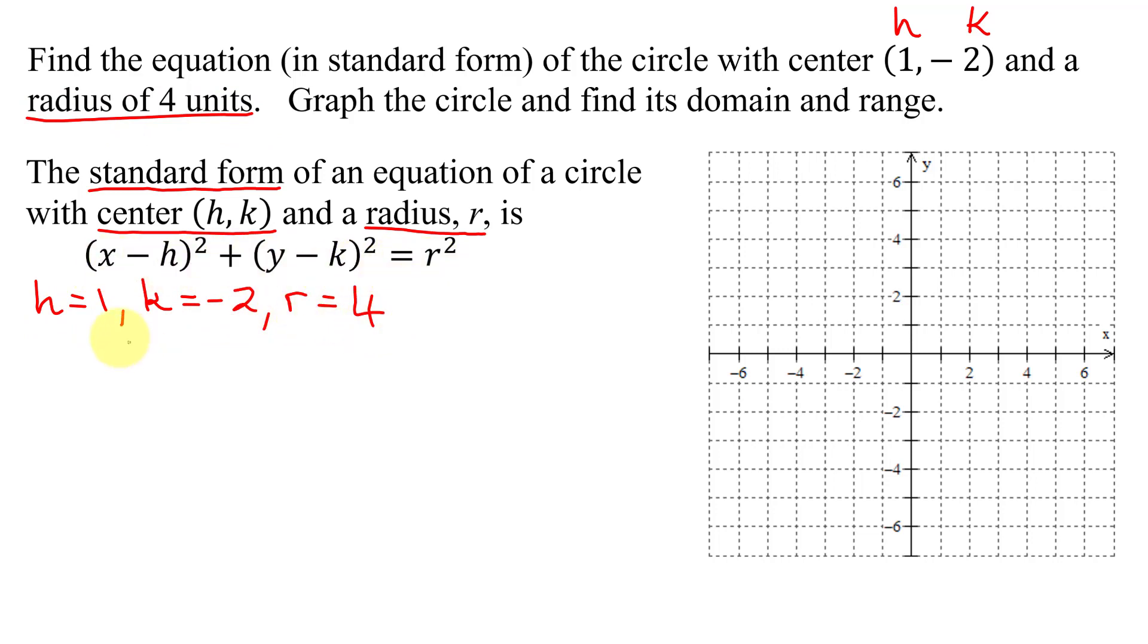So I get the quantity x minus h, so it's x minus 1 all squared, plus the quantity y minus k. So that's y minus k is a negative 2, so you have y minus negative 2 all squared, equals r squared. R is 4, so that's 4 squared.